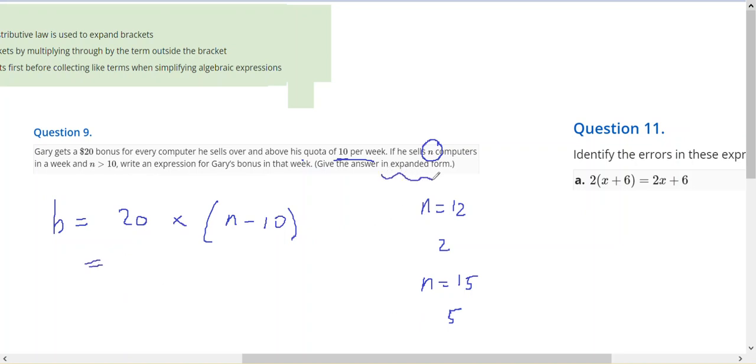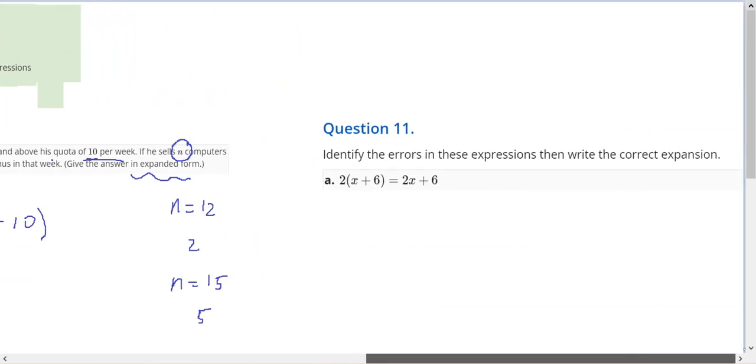Now I've got to write it in expanded form. So it's going to be 20n minus 200. And that will be the number of dollars of bonus for Gary in that week. Question 11, identify the error. Okay.